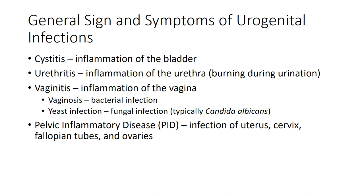Some of you may have heard of PID — pelvic inflammatory disease. This occurs with an infection of one or a combination of the uterus, cervix, fallopian tube, and/or ovaries. We can see pelvic inflammatory disease as a side effect of several of these infections. Most of the infections in this chapter are sexually transmitted diseases, but not all, so I'll make sure to point that out.